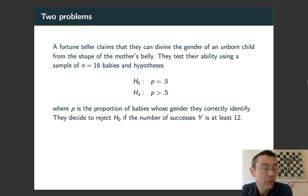The null hypothesis is they're just making random guesses, and the alternative hypothesis is that they can actually do better than random chance. They choose to reject the null hypothesis if they get at least 12 successes in that 16 baby trial.